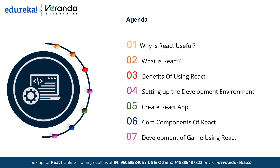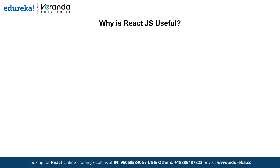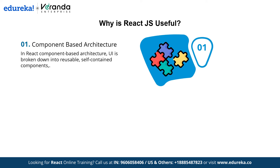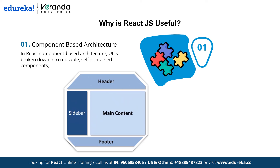Now that we have a clear roadmap, let's dive into the three major reasons that make React so useful. The first one is component-based architecture. In React's component-based architecture, the UI is broken down into reusable, self-contained components. Each component has its own structure and behavior. In this layout, the page is divided into different parts: a navigation bar at the top, a sidebar at the right, and the main display area. In React, we build each of these sections as individual components, meaning each one can function independently.